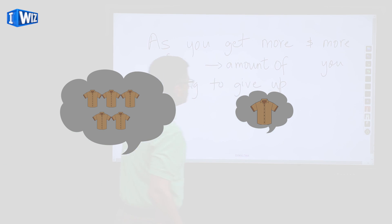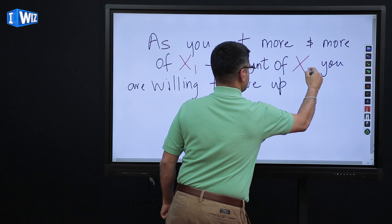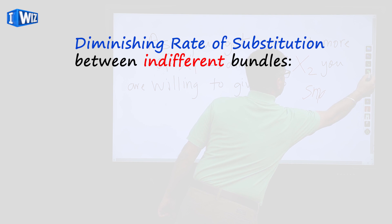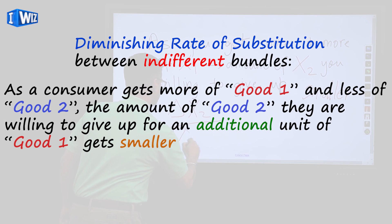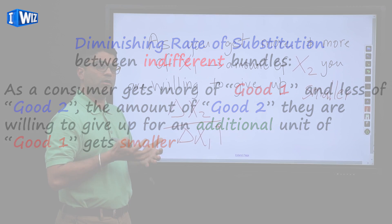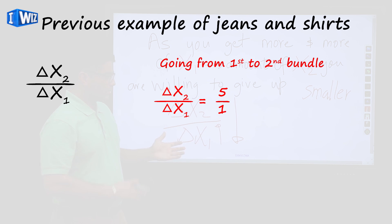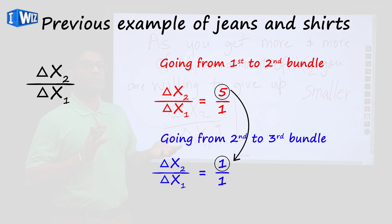So looking at the definition: as you get more and more units of X1, the amount of X2 that you're willing to give up as you keep getting an extra unit of X1 is going to get smaller and smaller. The ratio — change in X2 over change in X1 — as we keep getting more and more units of X1, the amount of X2 we are willing to give up becomes smaller and smaller. We are indifferent between these bundles, so what we are paying for X1 is how much X2 we are willing to give up, and that amount becomes smaller and smaller.